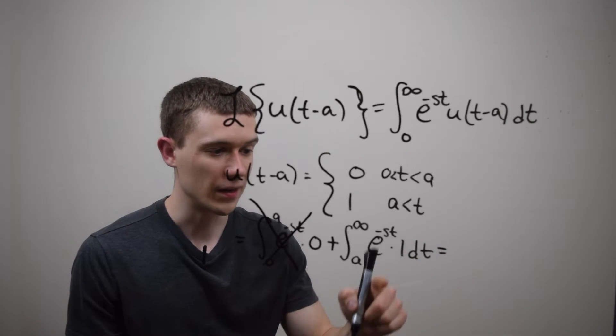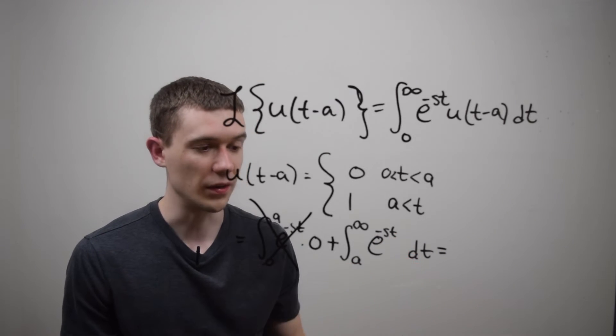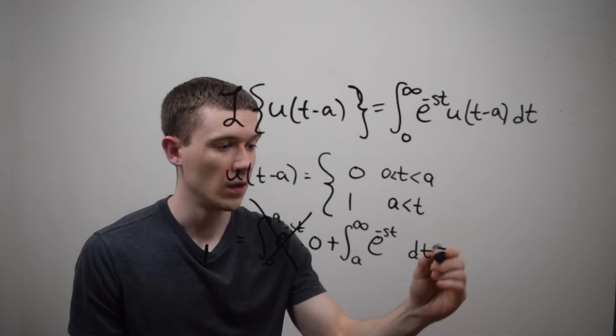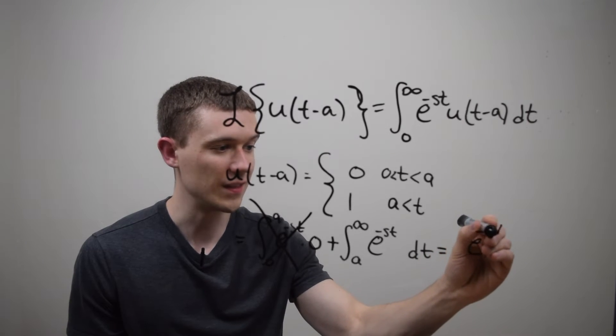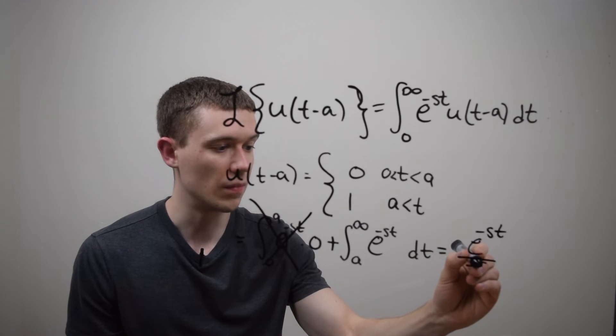So I really just have to take the antiderivative of e to the minus st. Well, that's just e to the minus st divided by minus s.